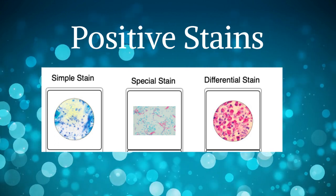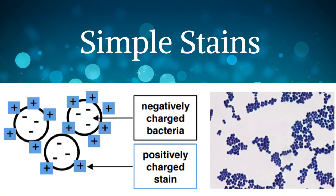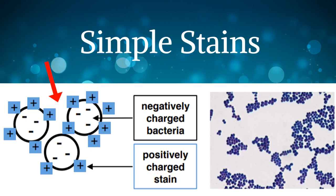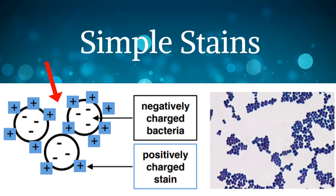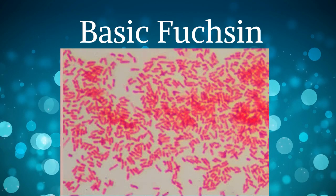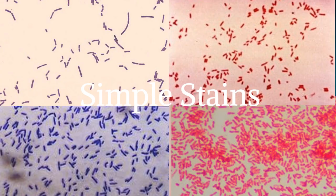Positive staining methods are further classified as simple, differential, and special. Simple stains use a single dye and a simple procedure, taking advantage of the ready binding of bacterial cells to dyes. Examples include malachite green, crystal violet, basic fuchsin, and safranin. Simple stains cause all cells in the smear to appear more or less the same color, but can still reveal bacterial characteristics such as shape, size, and arrangement.